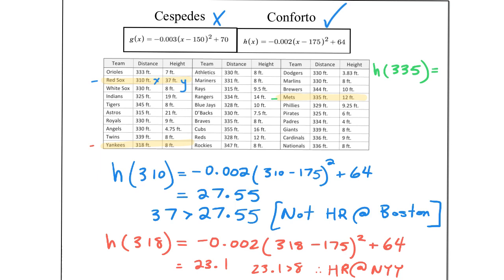So I'm going to be plugging in 335 for X here and see what my output is. I get an output of approximately, we want to make sure it's going to clear that 12-foot wall. If I plug in 335, I get 12.8, so just barely, but this does clear the wall. Since 12.8 is greater than 12, the height of the wall, this would be a home run at Citi Field.